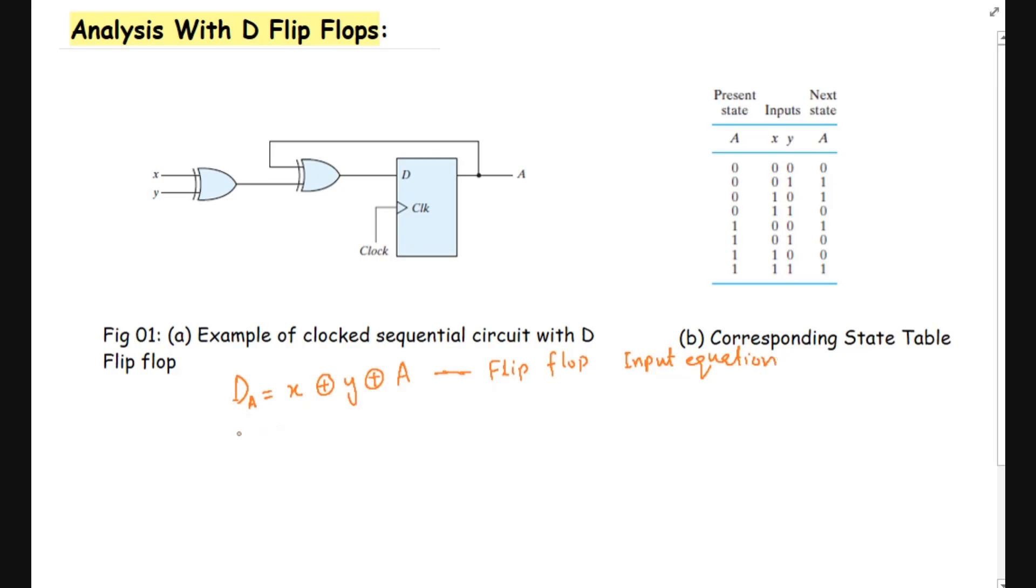Similarly, if we could write the state equation for this flip-flop, it will be equal to A(t+1) is equal to X XORed with Y XORed with A. This is the state equation of this complete sequential circuit.